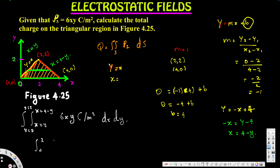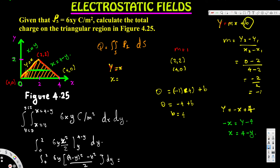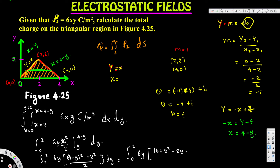Doing the integration with respect to x first, we get the integral from 0 to 2 of 6y times x squared over 2, evaluated from y to (4 minus y), dy. Plugging in (4 minus y) and y, we get the integral from 0 to 2 of 6y times [(4 minus y)² minus y²] divided by 2, dy. Simplifying this gives the integral from 0 to 2 of (48y minus 24y²) dy.